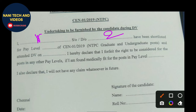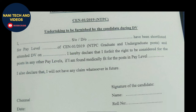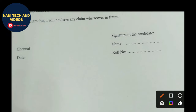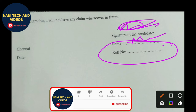Point one: candidate name. Point two: father name. Point three: Level 6. Point four: date — fill in the date on which you received your call. Point five and point six: Chennai date. Then fill in the date and signature of the candidate. Signature, name, and roll number — every candidate has a separate roll number.